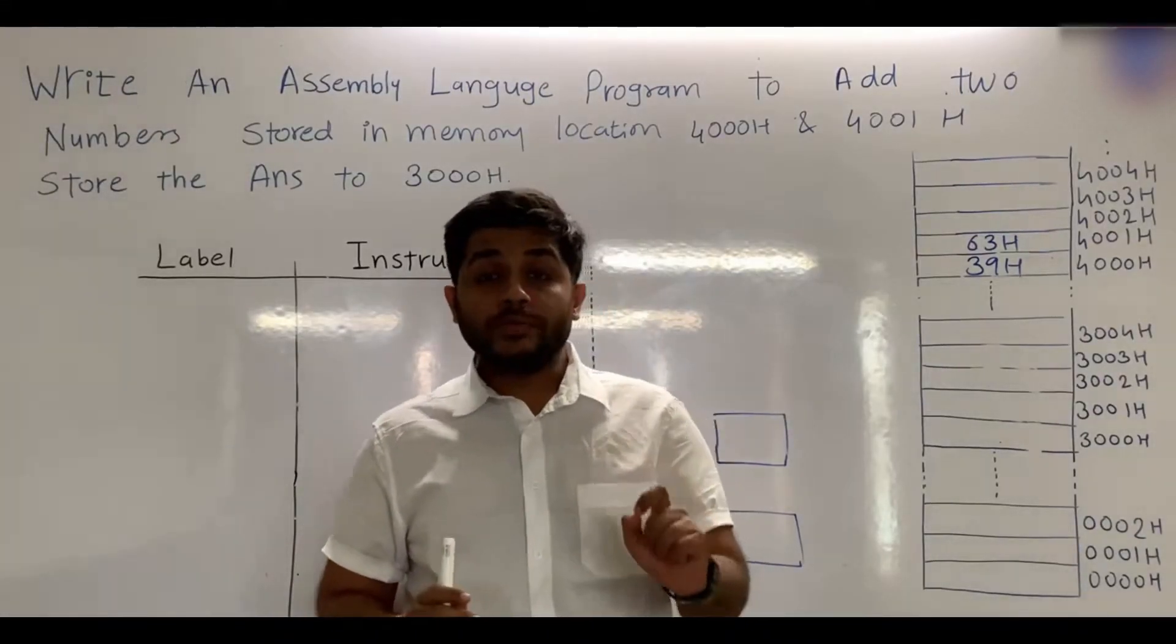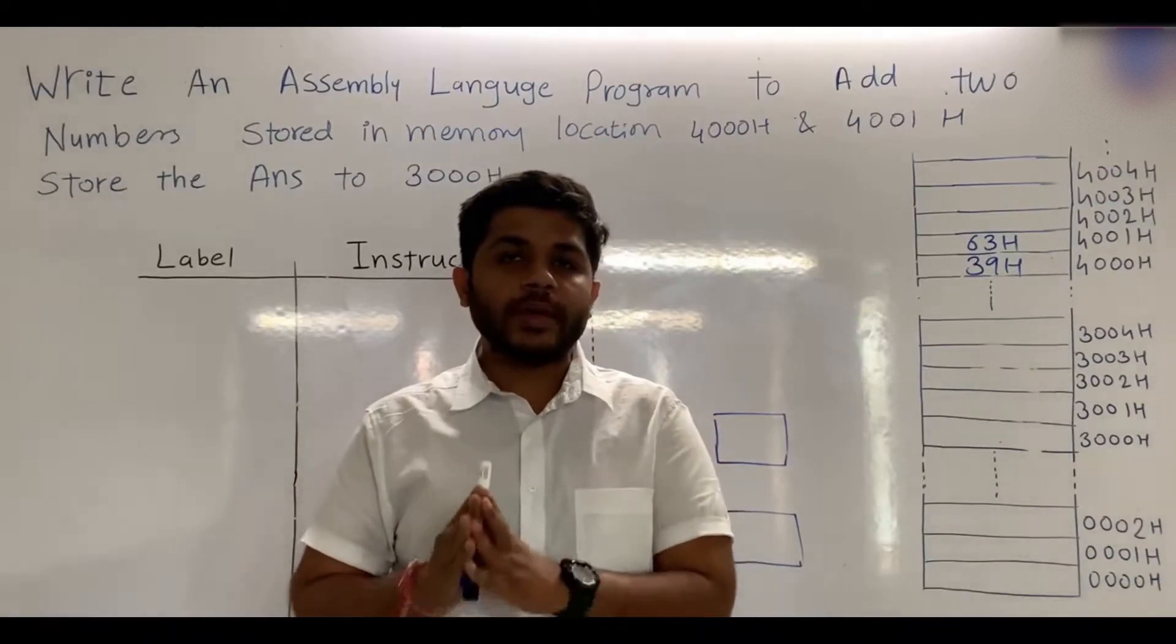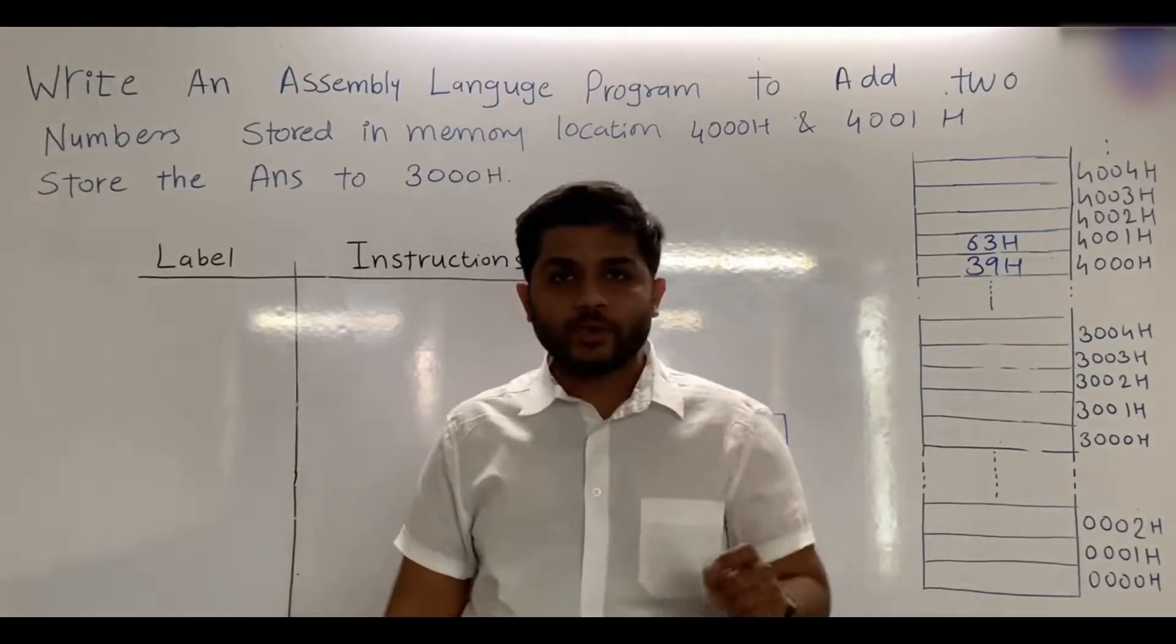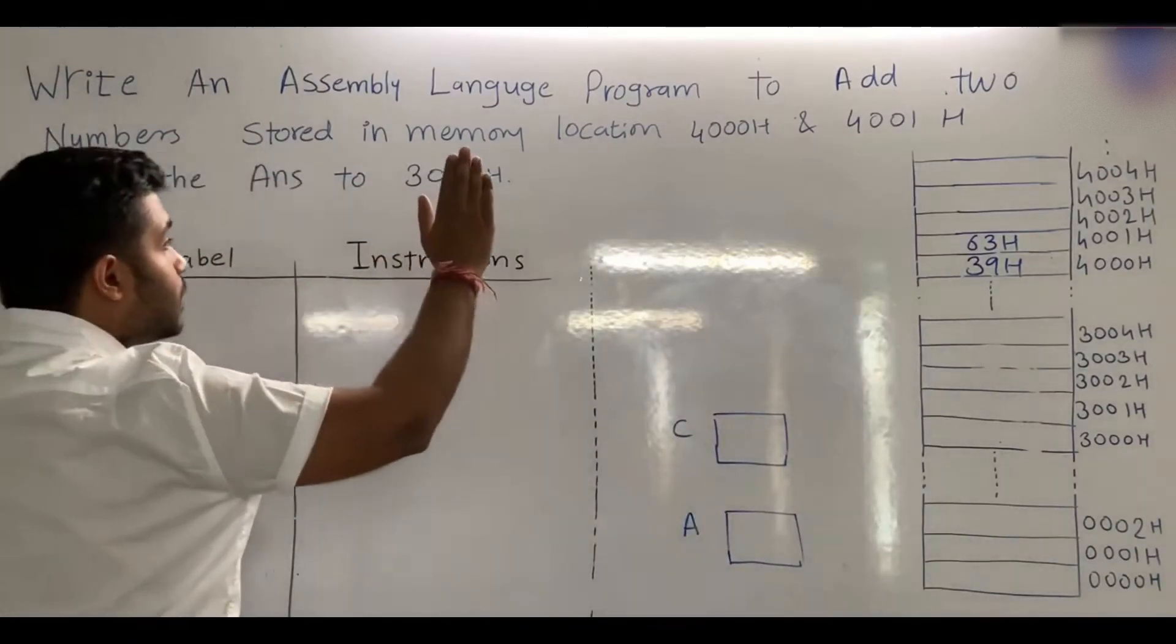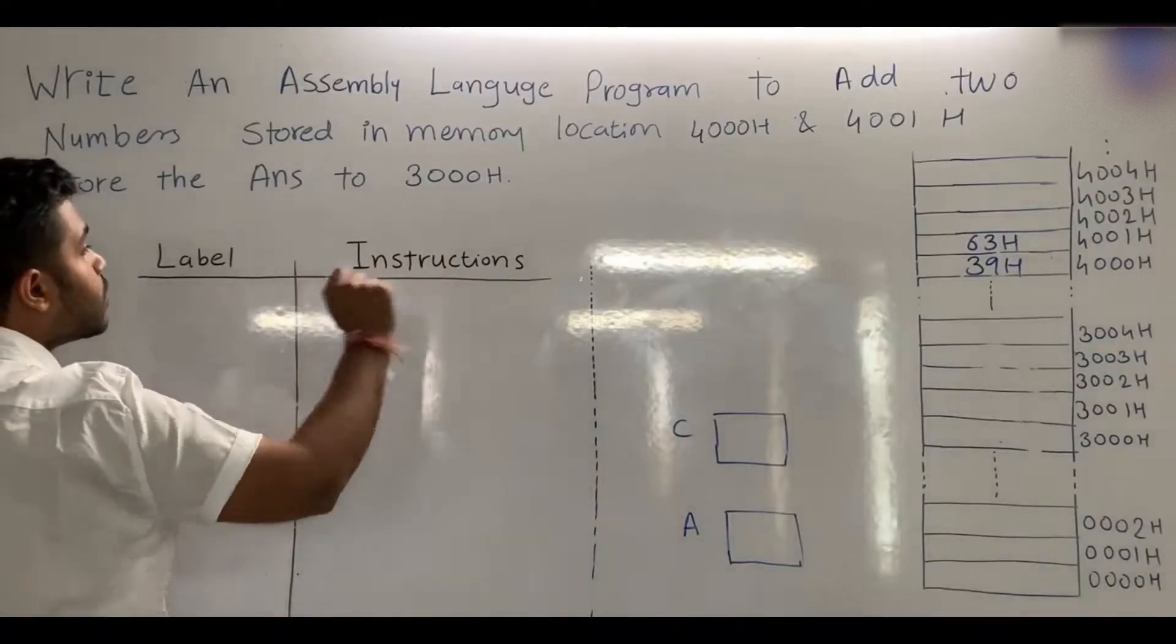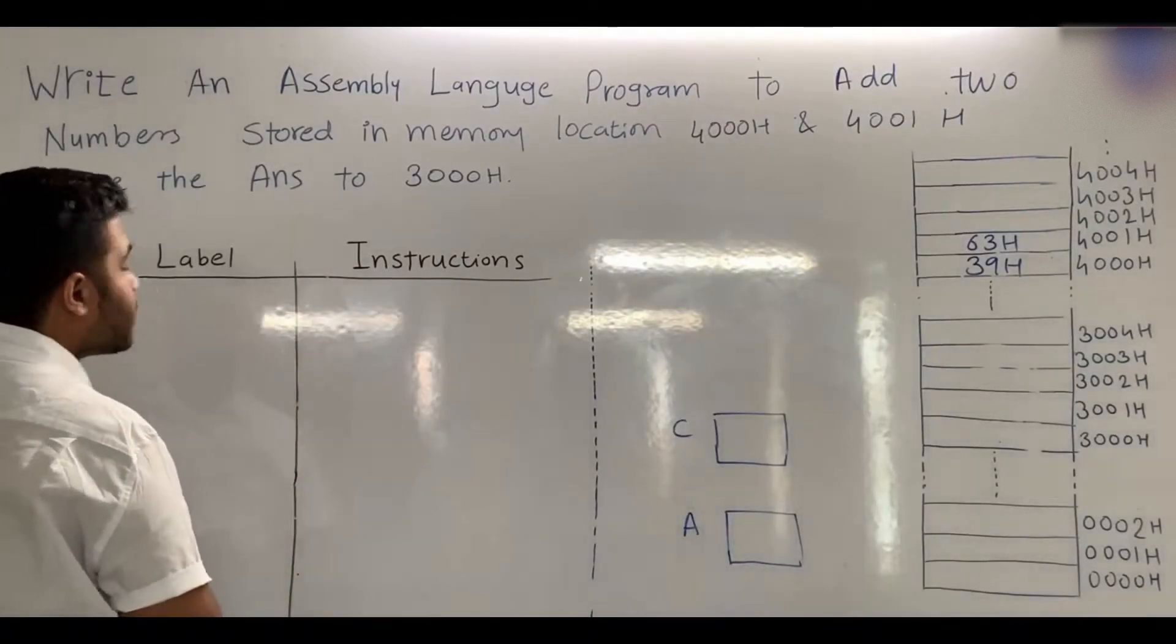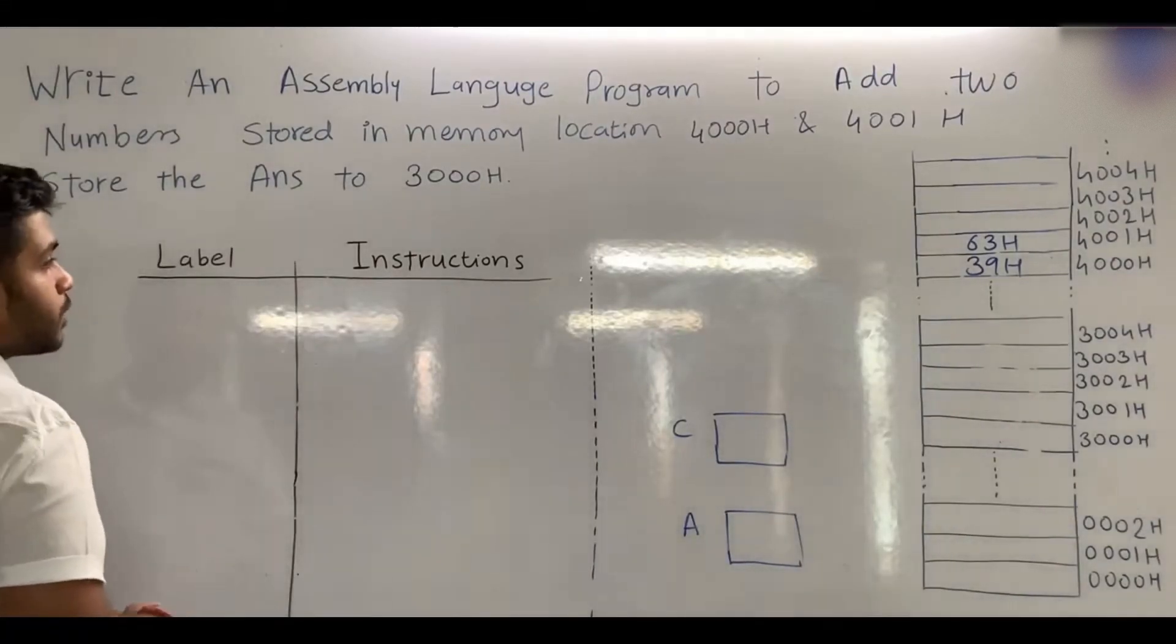Hi everyone, today we are going to see a simple assembly language program for the microprocessor 8085. The question is: write an assembly language program to add two numbers stored in memory locations 4000H and 4001H, and store the answer to 3000H.